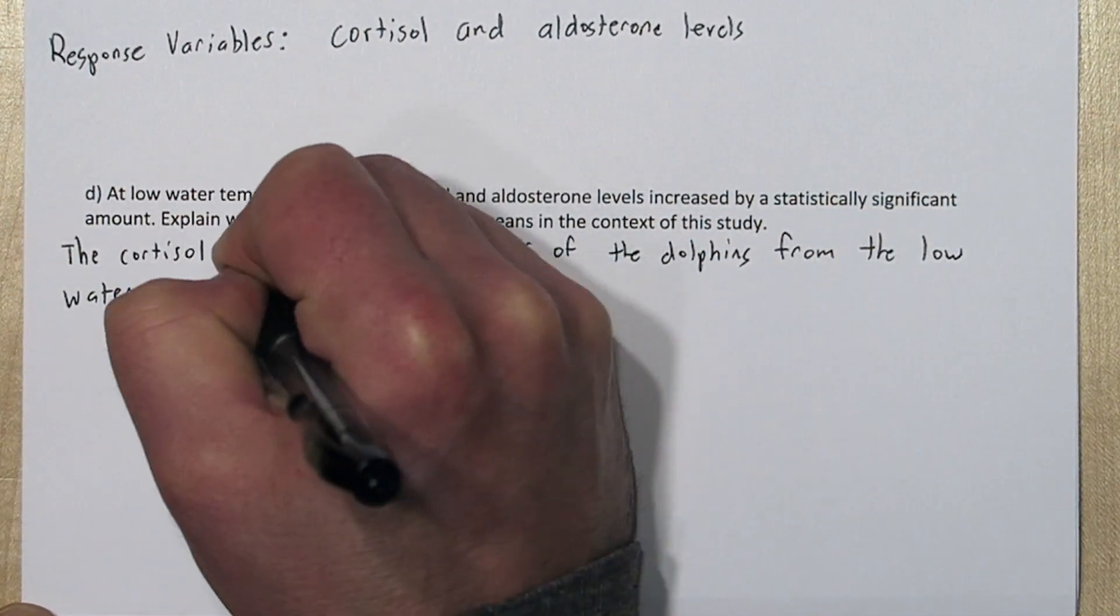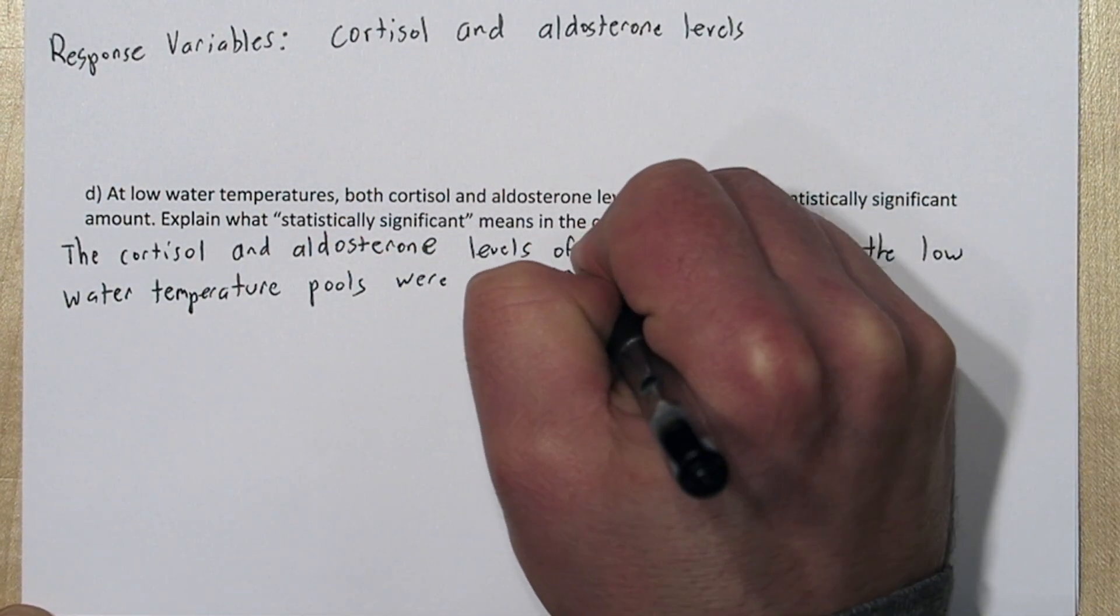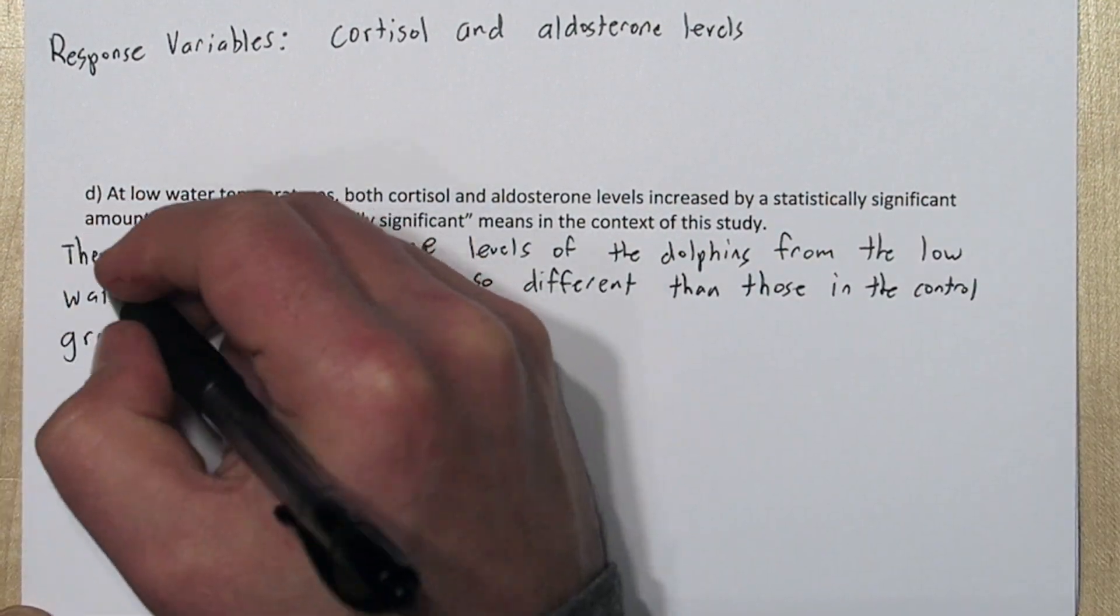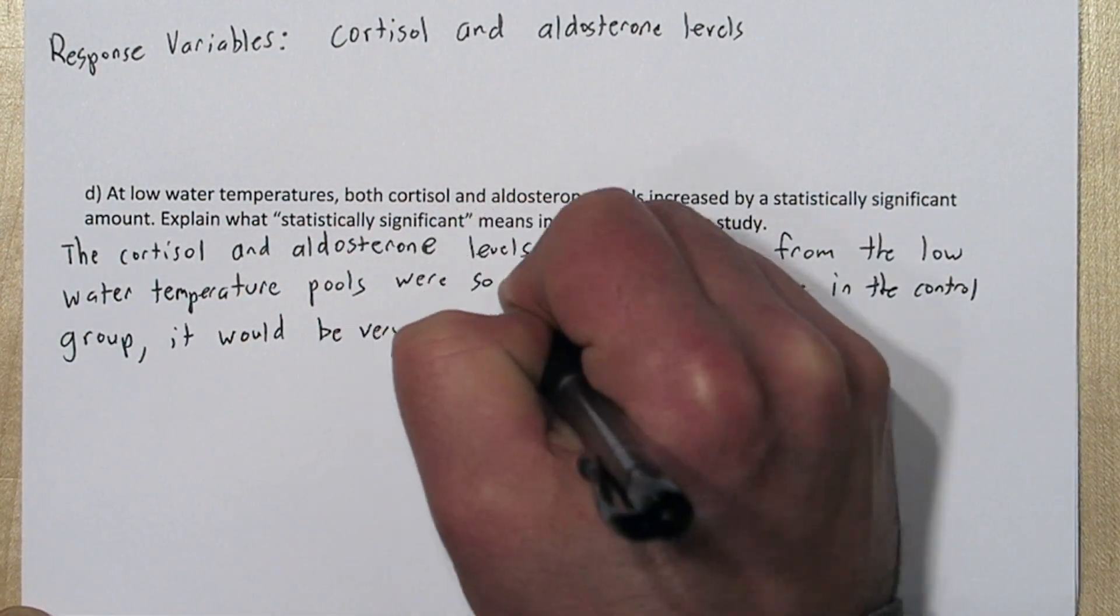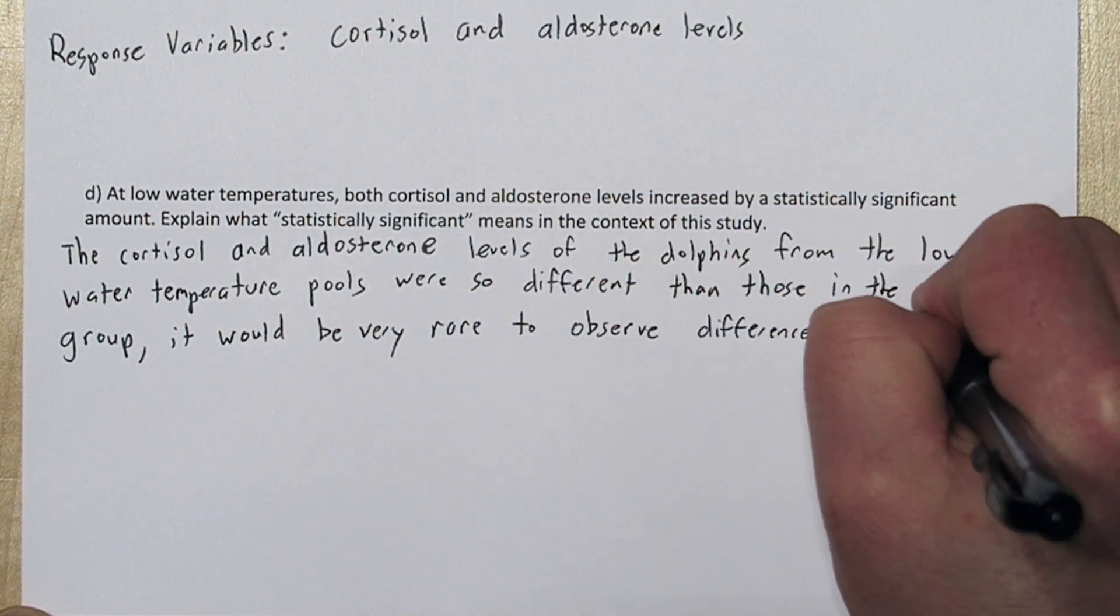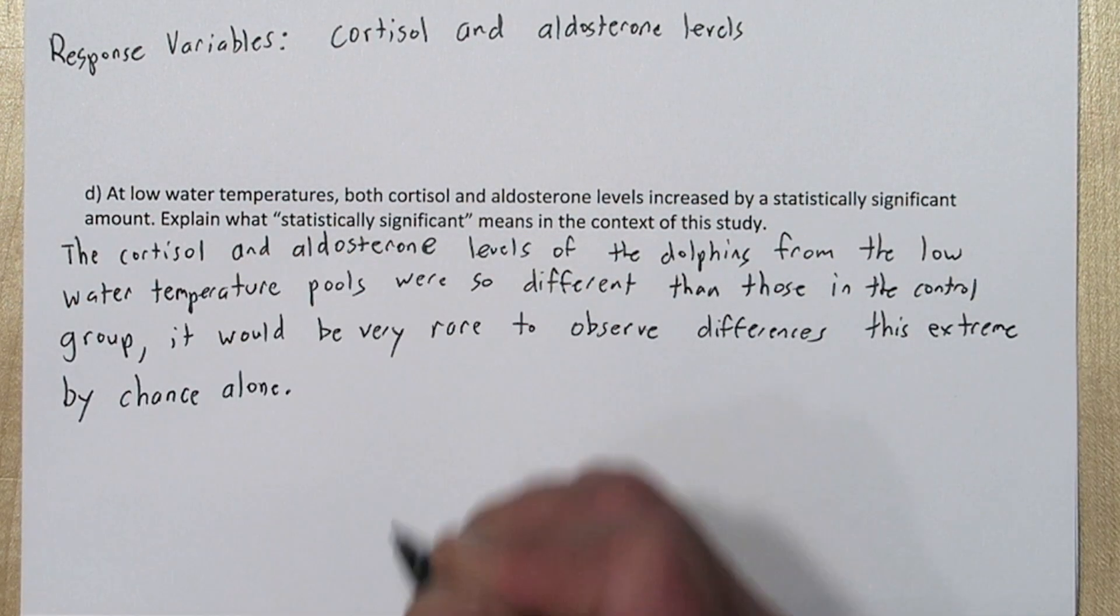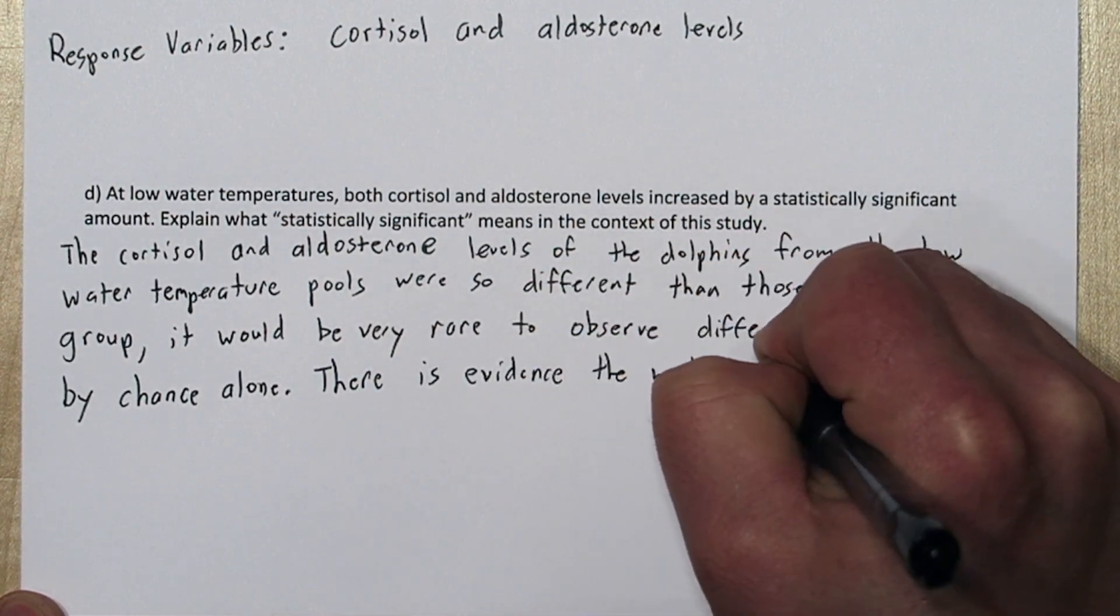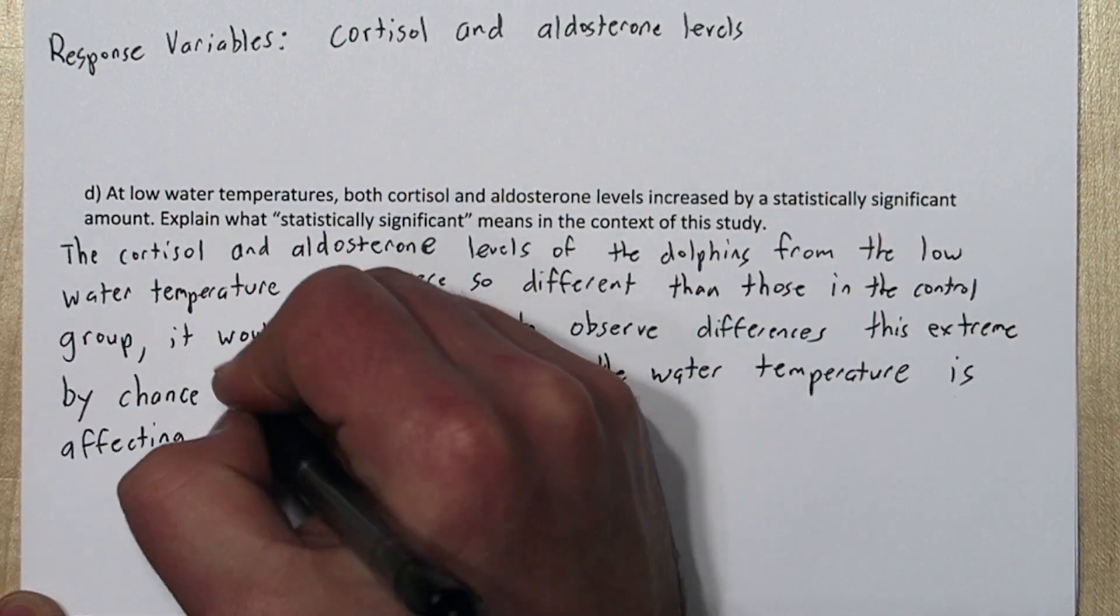But statistical significance means the cortisol and aldosterone levels of the dolphins from the low water temperature pools were so different than those of the control group, it would be very rare to observe differences that extreme by chance. Therefore, there's evidence the water temperature is affecting the hormone levels.